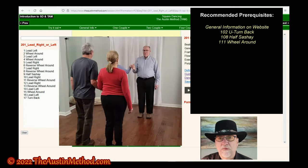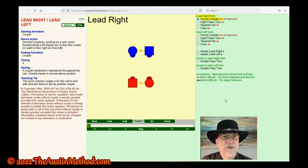As we often want to, let's go to the definition. The definition here is that the starting formation is a couple. Any couple. Half sashayed couple, boy boy couple, girl girl couple, normal couple.